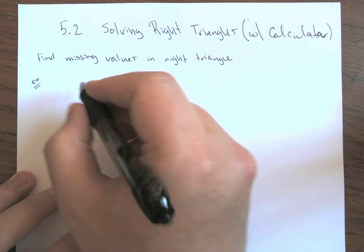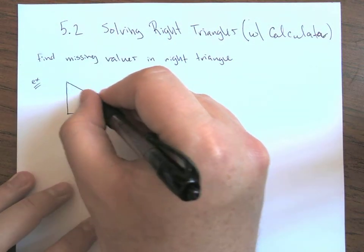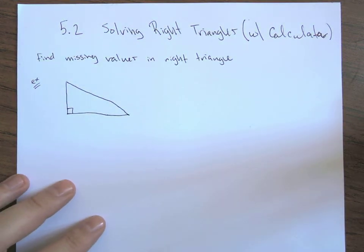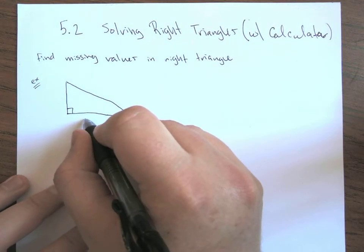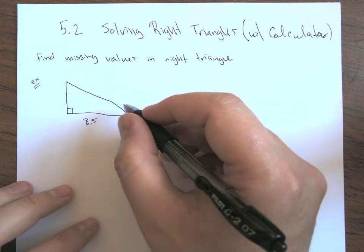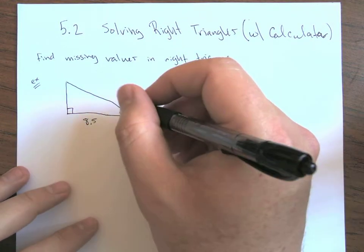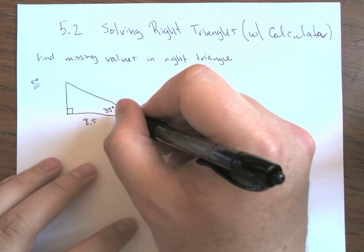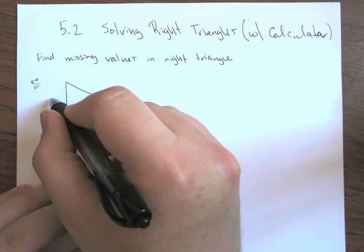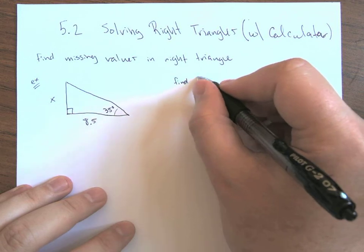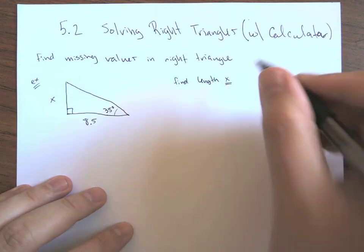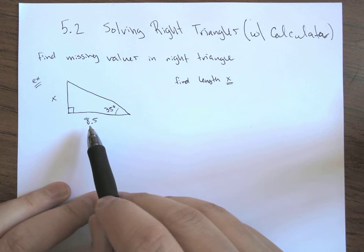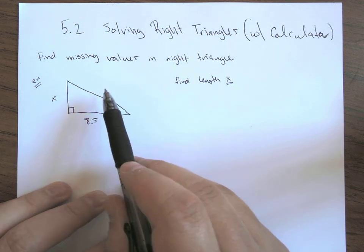So let's just take a generic triangle. I know I keep drawing essentially the same triangle, but that's okay. So let's say maybe this length down here is like 8.5. Let's say this angle looks like 35 degrees. And what we'd like to do is find the length x.